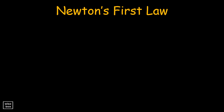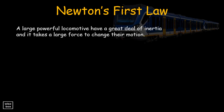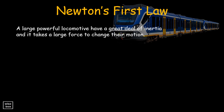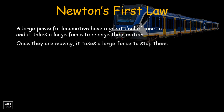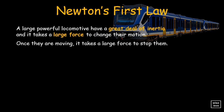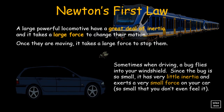Let's have some examples. A large powerful locomotive has a great deal of inertia, and it takes a large force to change its motion. Once it is moving, it takes a large force to stop it. Sometimes when driving, a bug flies into your windshield. Since the bug is so small, it has very little inertia, and exerts a very small force on your car — so small that you don't even feel it.